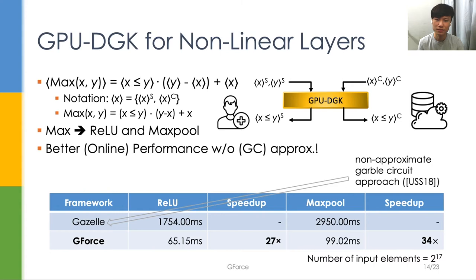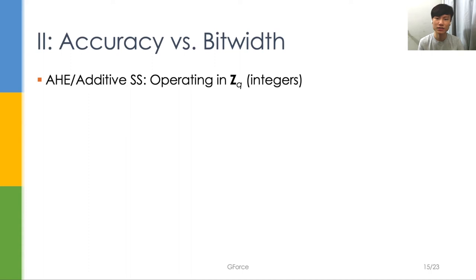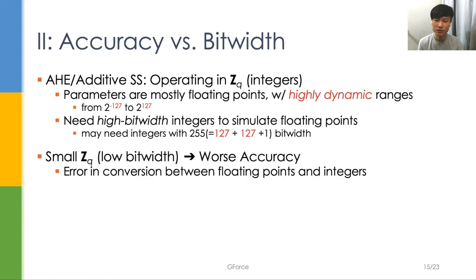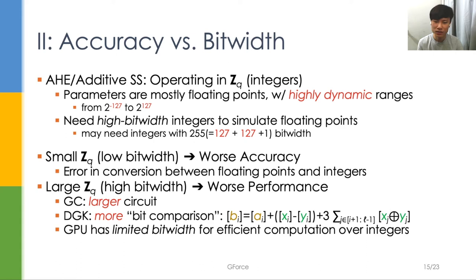Now, let's talk about another major issue in oblivious inference, which is accuracy versus bitwidth. In crypto tools like AHE and additive secret shares, the operations are over integers, or you may consider that cryptographically protected data values are integers with limited bitwidth. The problem is that neural networks usually operate over floating points, which may need 255 bitwidth integers. If we use low bitwidth integers without proper treatment, error will occur when converting the floating points to integers. If we use high bitwidth integers, it will lead to poor performance.